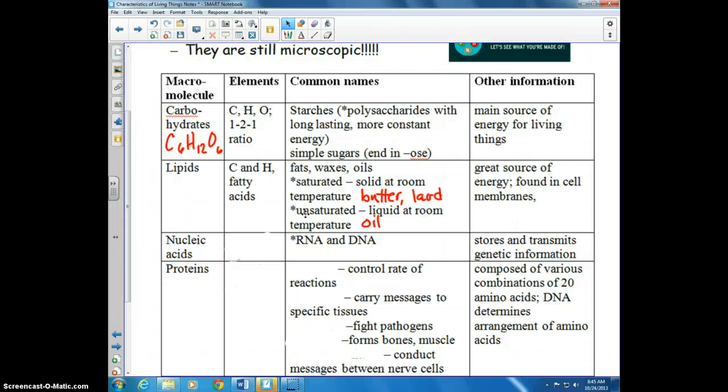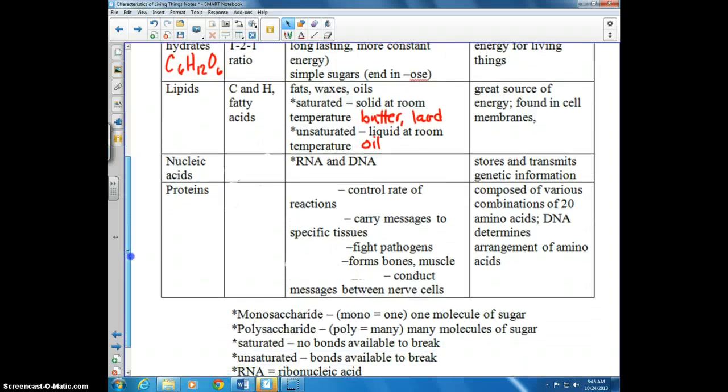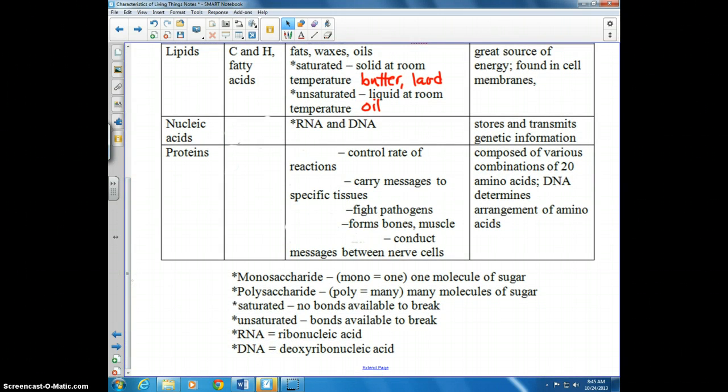The other two types of macromolecules we're going to look at this year are nucleic acids. Those include DNA and RNA, which are responsible for storing and transmitting genetic information. We talked about DNA a little bit earlier in the year, and we're going to talk about RNA because it plays a huge role in protein synthesis. Nucleic acids are made up of hydrogen, oxygen, nitrogen, carbon, and phosphorus.